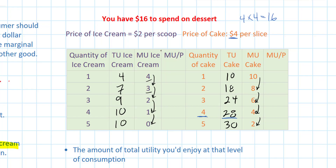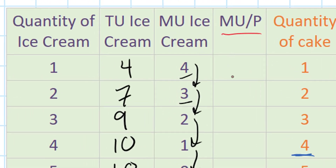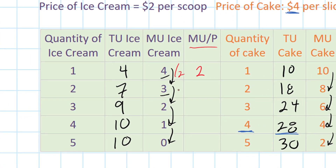So let's look at the column here. The first scoop of ice cream provided me with four utils but it cost two dollars. So I can divide four by two to get a marginal utility per dollar of two. I'm going to divide the marginal utility by the price at every level of consumption to get the marginal utility per dollar.